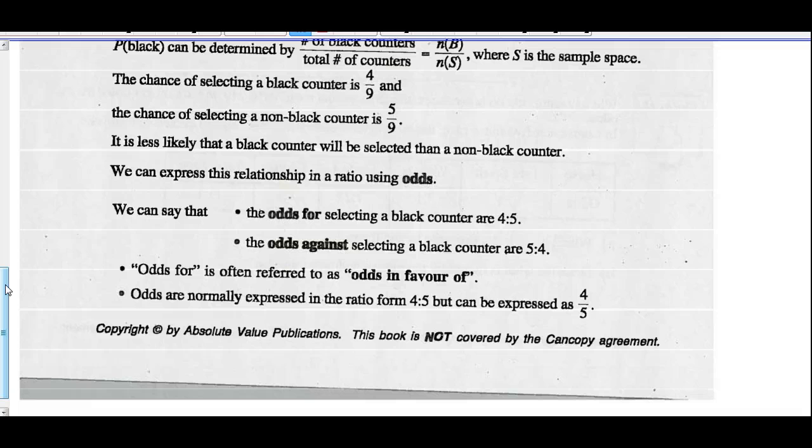We can express this relationship using odds. We can say that the odds for selecting a black counter is four to five. Or the odds against selecting a black counter are five to four. Odds for is often referred to as odds in favor of. Odds are normally expressed in the ratio form four to five, but sometimes can be expressed in fractional form four-fifths.